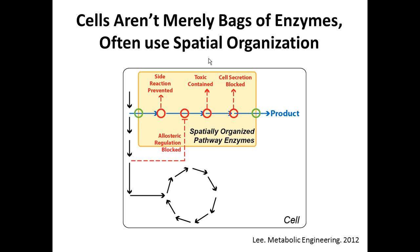This combinatorial approach is now the first thing we do in the lab whenever we start with a new pathway. It becomes easier as our characterized parts library grows. But we know the cell doesn't only control pathways through expression level — it also uses spatial organization to address many of the same problems, and this is another layer of control we would like to add.